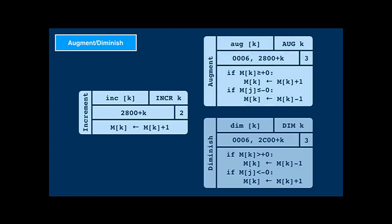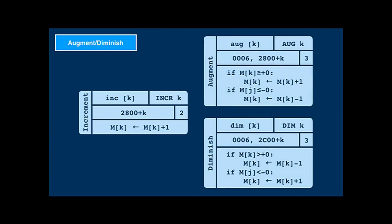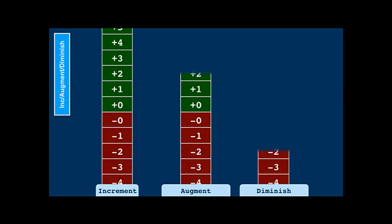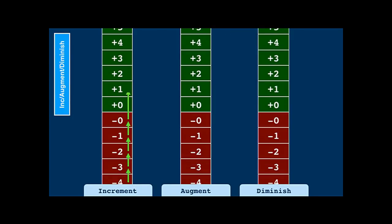There is no corresponding decrement instruction. Instead, there are two similar instructions: augment and diminish. The increment instruction adds 1 to the original value. The augment instruction adds 1 to all positive values and subtracts 1 from all negative values — it effectively increments the absolute value while retaining the sign. The diminish instruction decrements positive values and increments negative values.